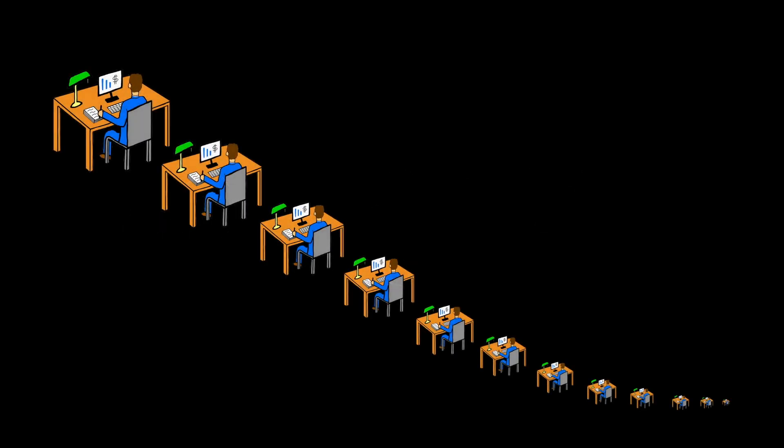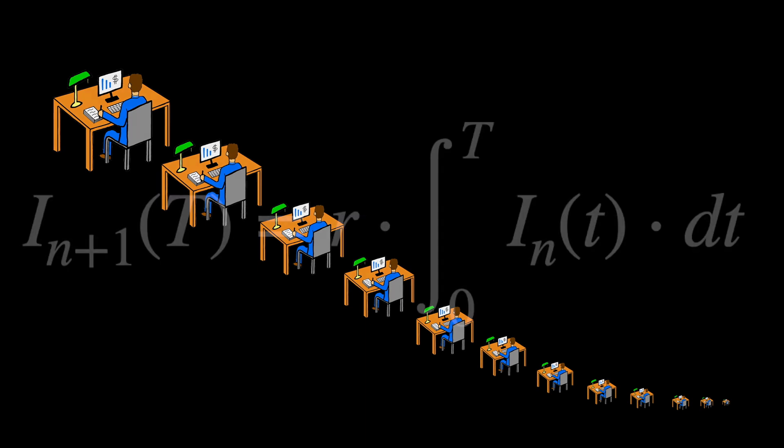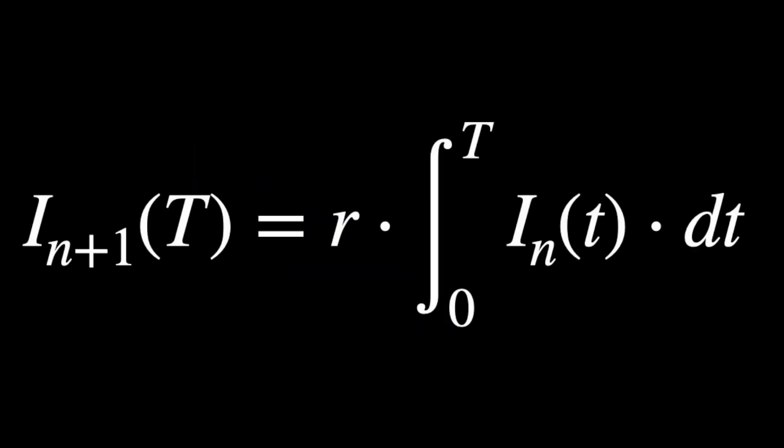The interest calculated at each desk represents the integral of the one in front of it, times the rate R. We can write this as I sub n plus 1 of T is R times the integral from 0 to T of I sub n DT.